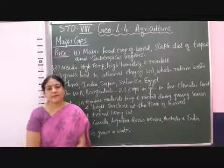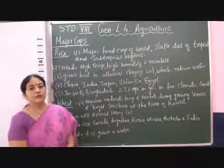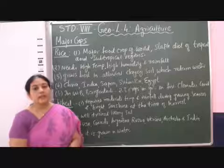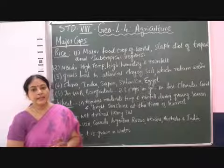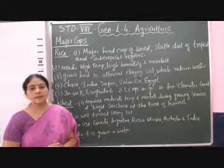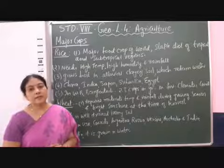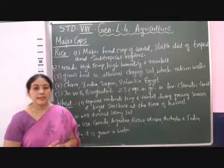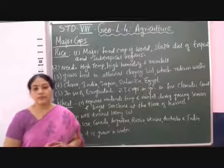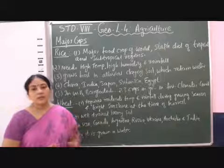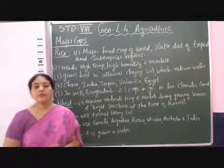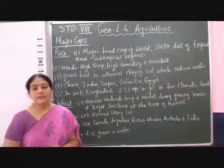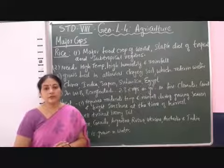Good morning everybody. Let us continue with the fourth chapter of Geography, that is Agriculture. Till now we have studied about farming systems, and now let us study about the major crops. The major crops can be divided as food crops and non-food crops. In this video we discuss about rice and wheat, which are the two main food crops.